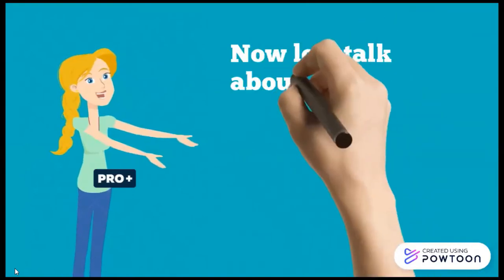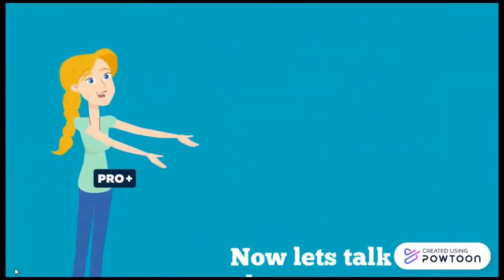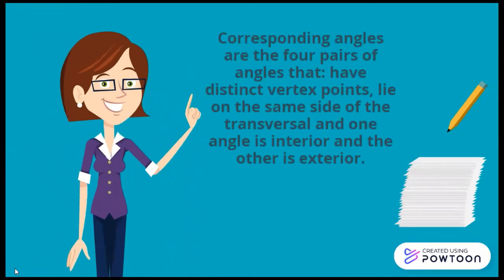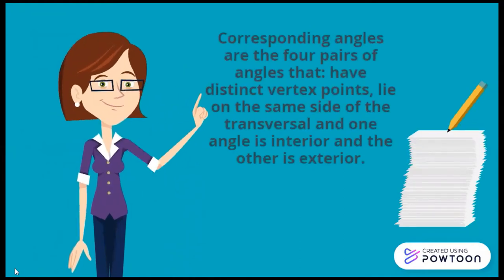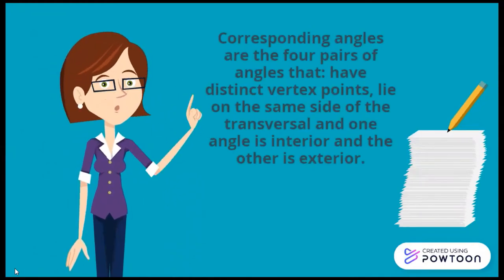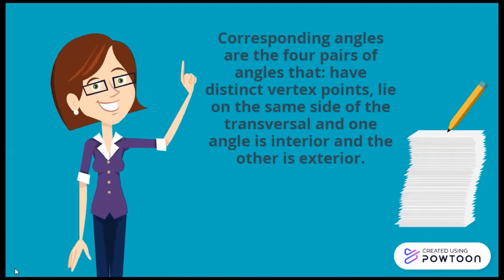Now let's talk about transversal. Corresponding angles are four pairs of angles that have distinct vertex points, lie on the same side of the transversal, and one is an exterior angle and one is an interior angle.